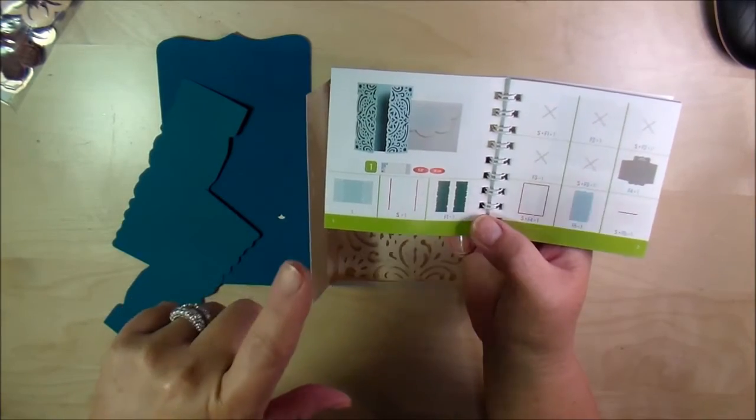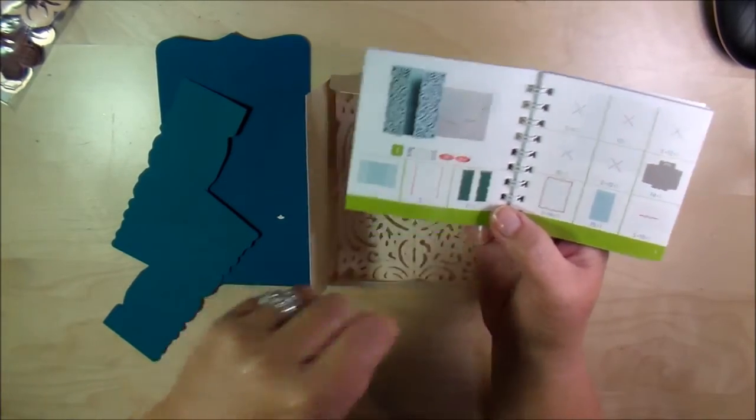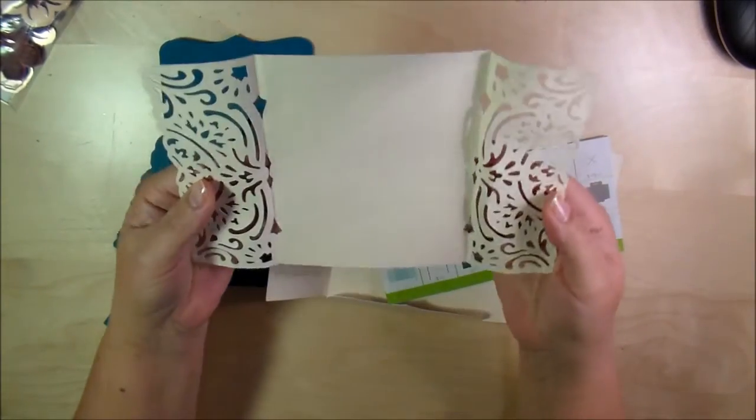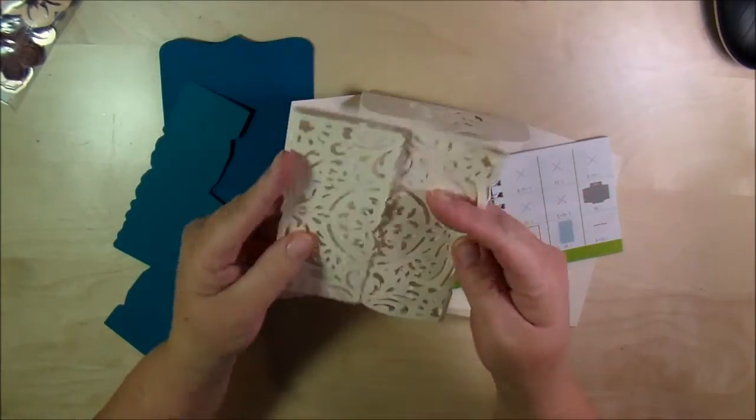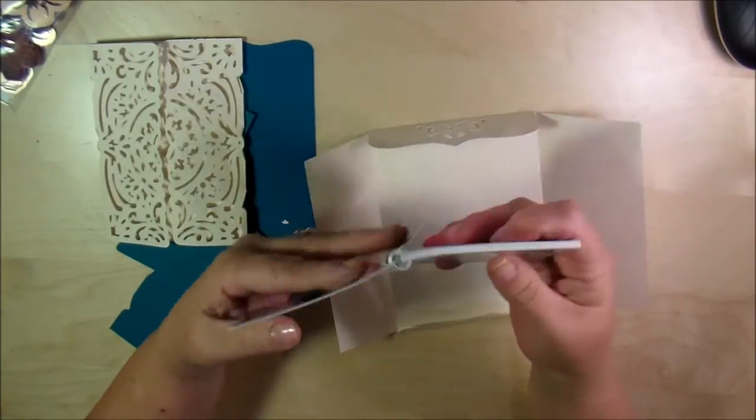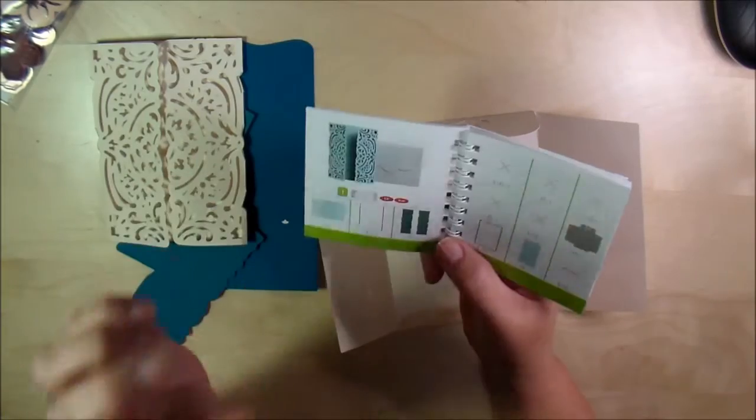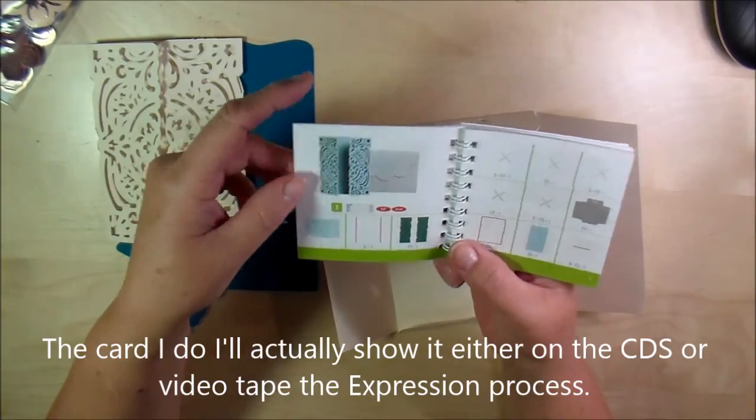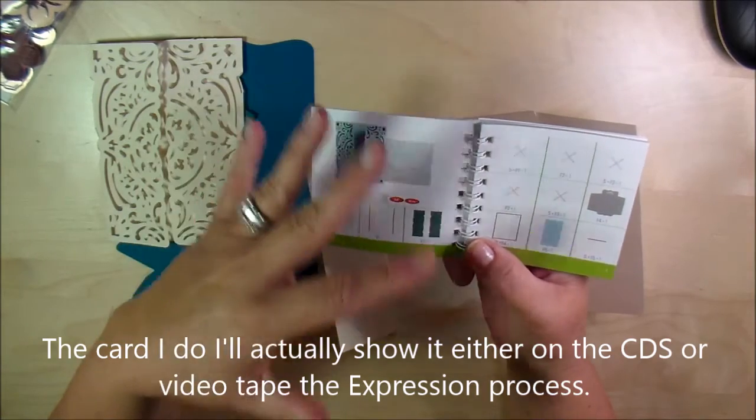Your Cricut's going to cut out this one first, and this is it right here. It's going to cut it out flat and then with your score blade. Now the Explore, the Cricut Design Space will automatically do this—not automatically, but you can just click on the go on the screen and it'll score it.